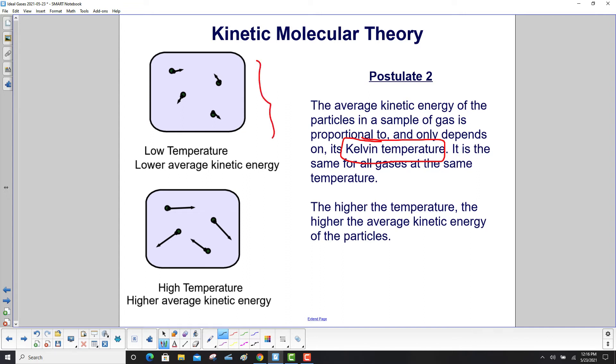So here we have a low temperature, and these vectors represent the velocity, and they have a lower average kinetic energy. Over here, high temperature, longer velocity vectors, which show that you have a higher average kinetic energy.